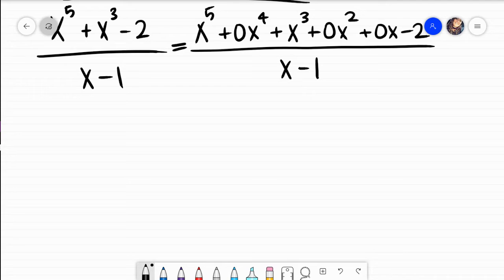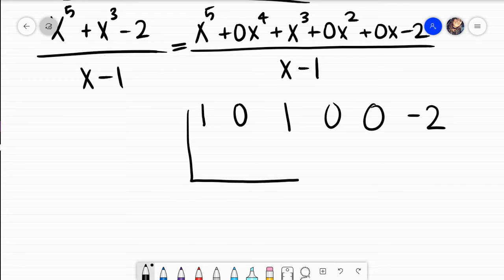And what I would do is I have a 1, I have a 0, I have a 1, 0, 0, negative 2. I'm going to do the same thing I've been doing, putting my bottom right box under my farthest right term.